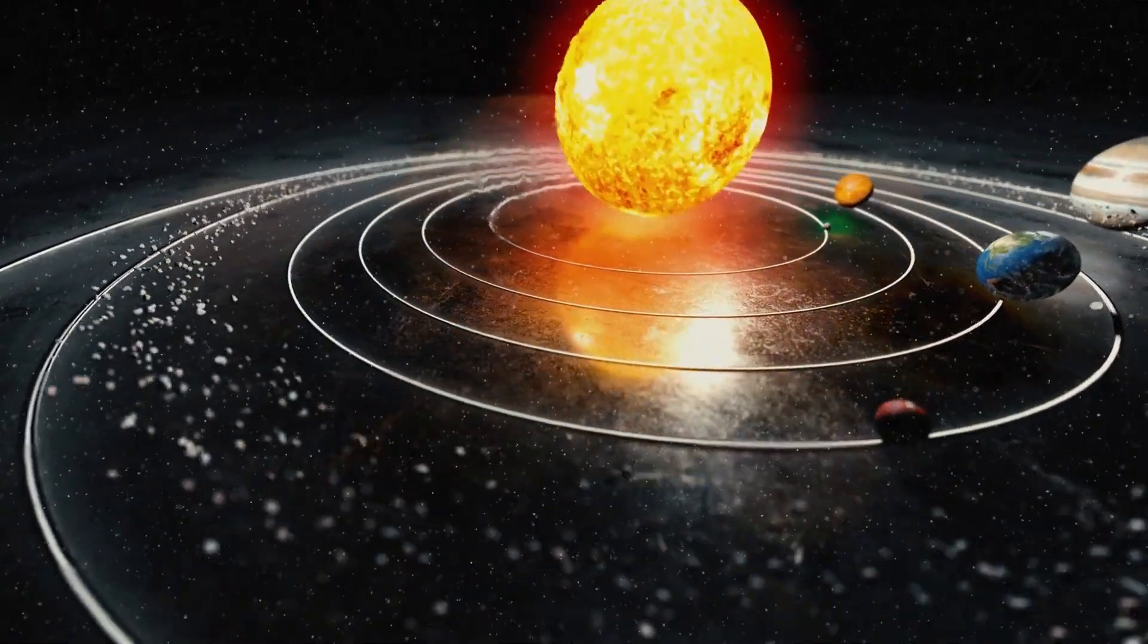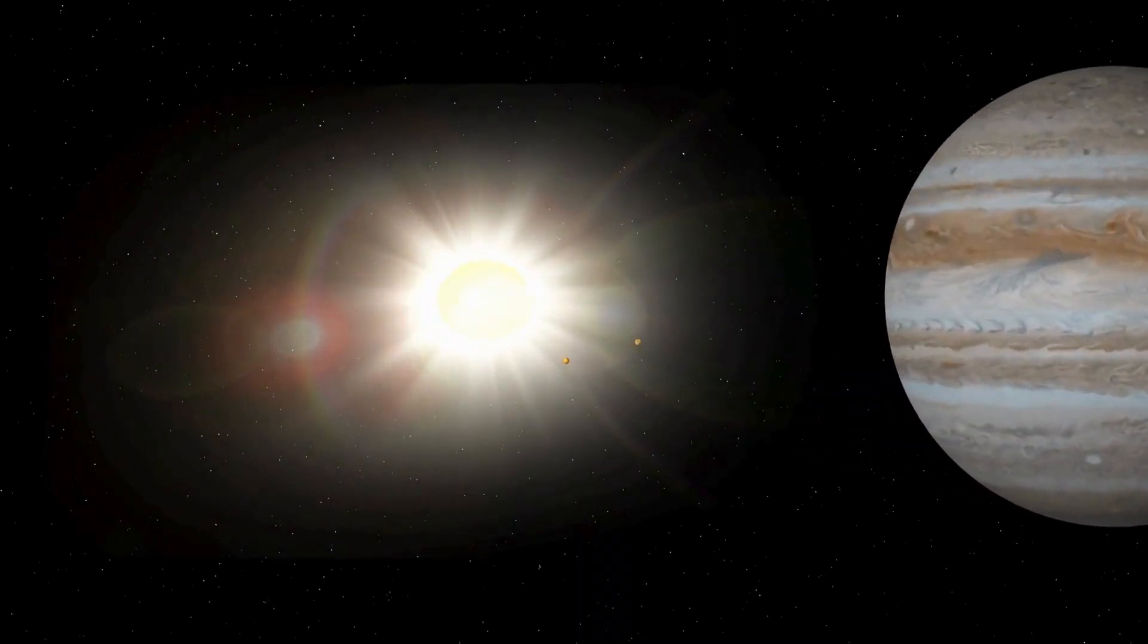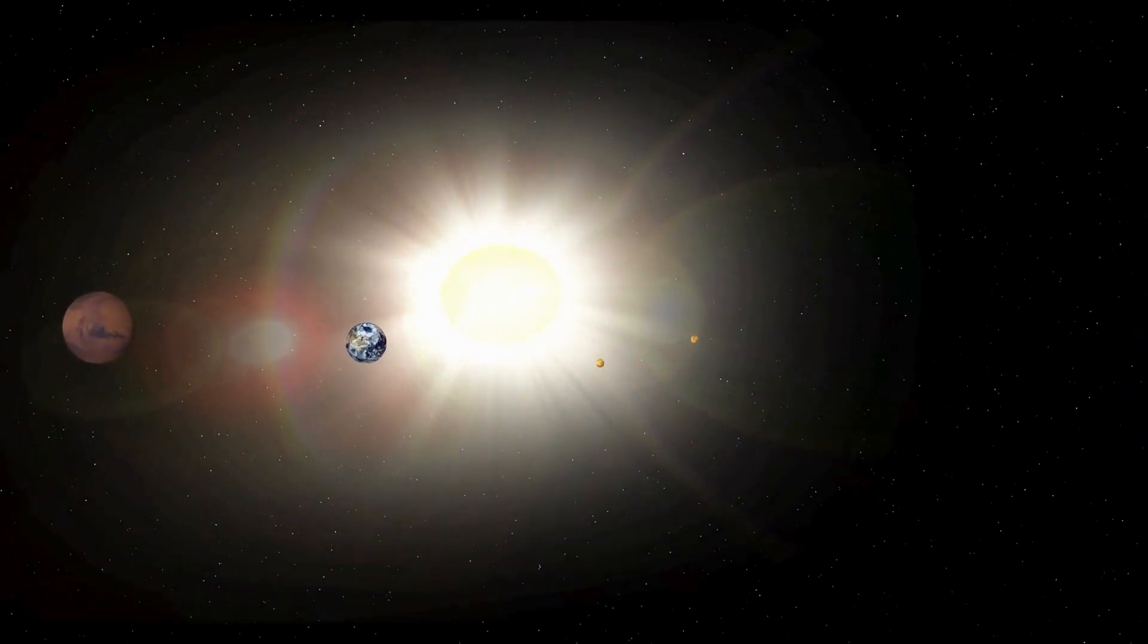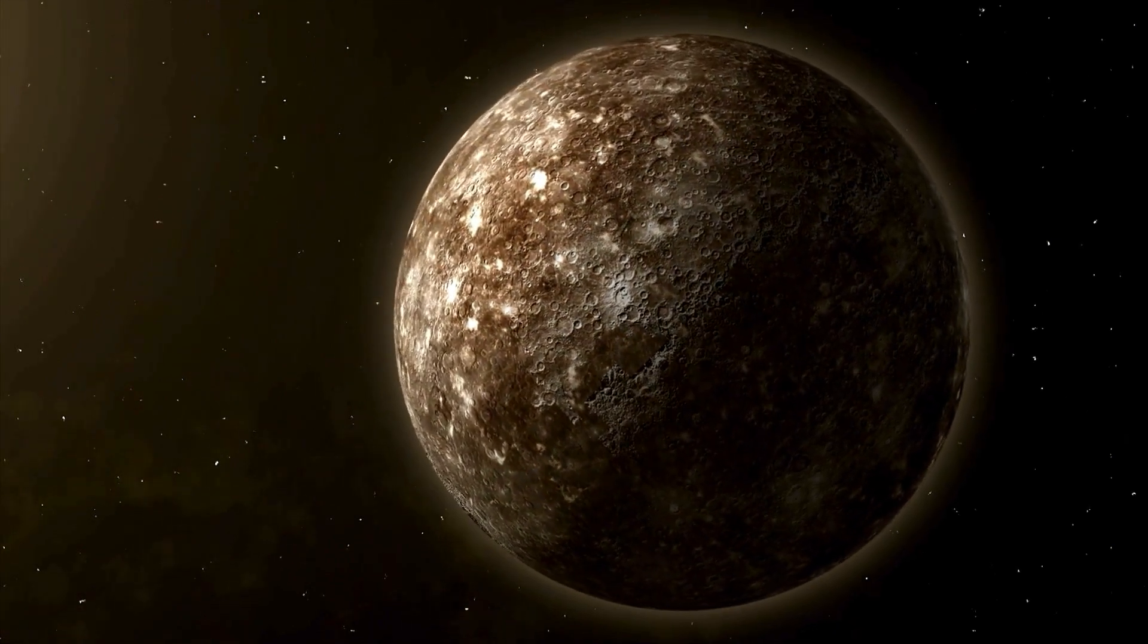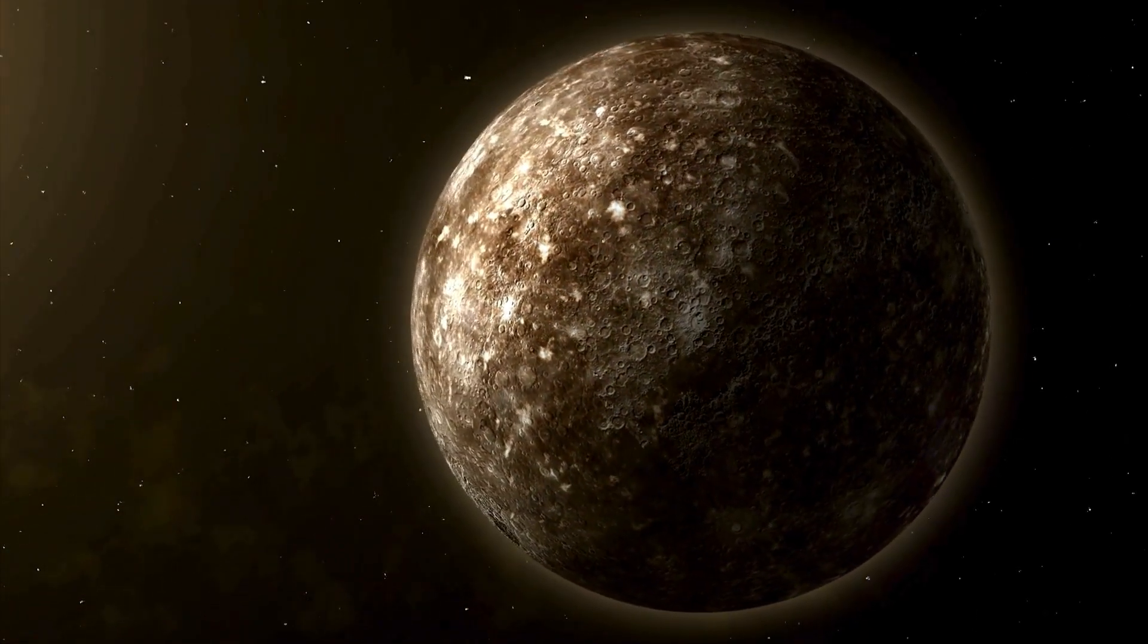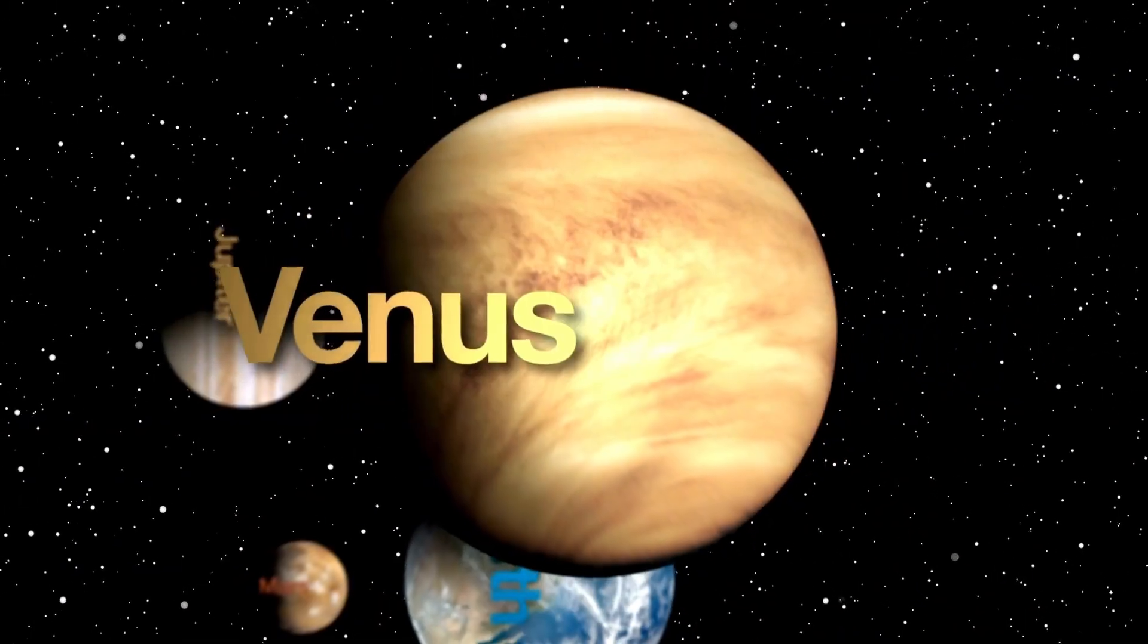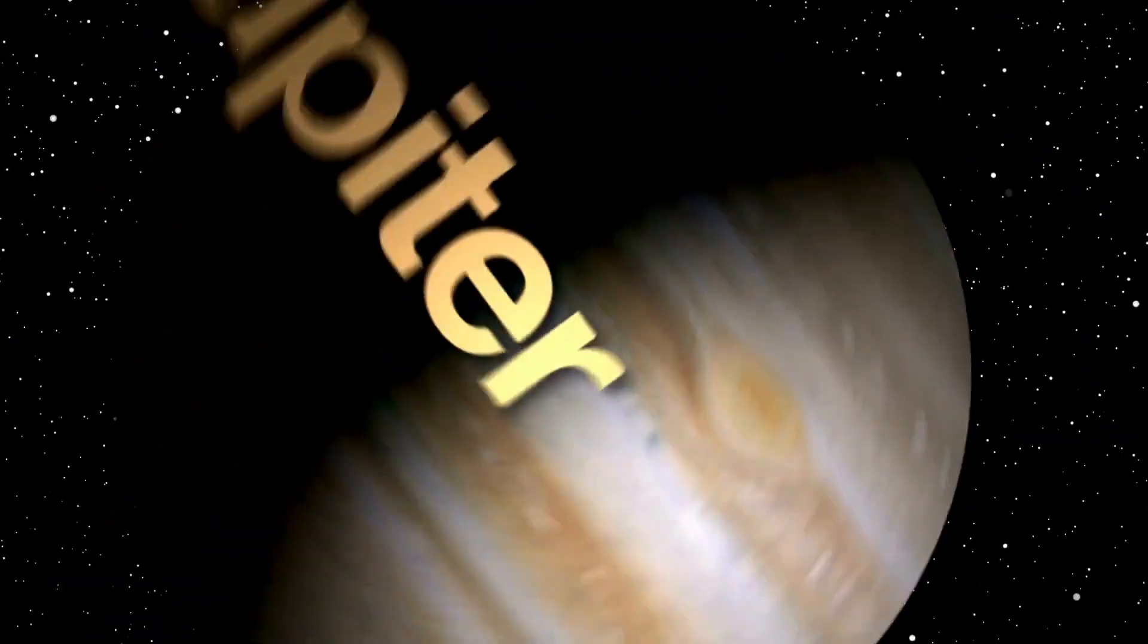The three-body problem in space involves figuring out how three objects, like Pluto, Neptune, and the Sun, move and interact with each other due to their gravity. It's like trying to predict where they will go based on where they start and how they pull on each other. In Pluto's case, this problem shows how its orbit, Neptune's orbit, and the Sun's gravity all work together in a complex way.